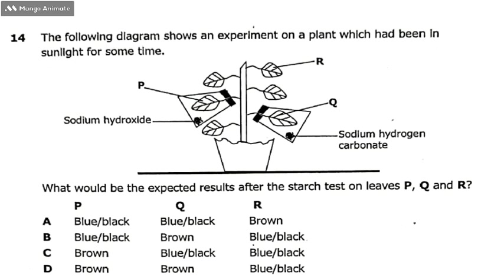So what I need to note is that sodium hydroxide absorbs carbon dioxide from the leaf. Then sodium hydrocarbonate adds carbon dioxide, so the leaf will be provided with carbon dioxide. R is neutral — that is a control experiment. That one will help us to determine what happens.